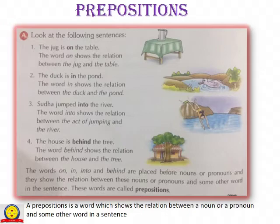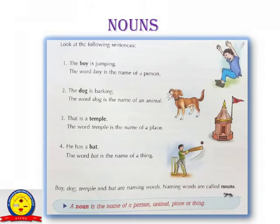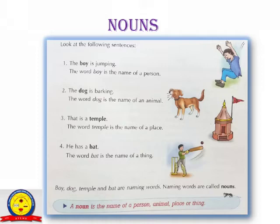We will start with the noun. What is a noun? A noun is the name of a person, animal, place, or thing. Here are some examples. Number one: The boy is jumping — the word 'boy' is the name of a person. Next: The dog is barking — the word 'dog' is the name of an animal. Next: That is a temple — the word 'temple' is the name of a place. Next: He has a bat — the word 'bat' is the name of a thing.